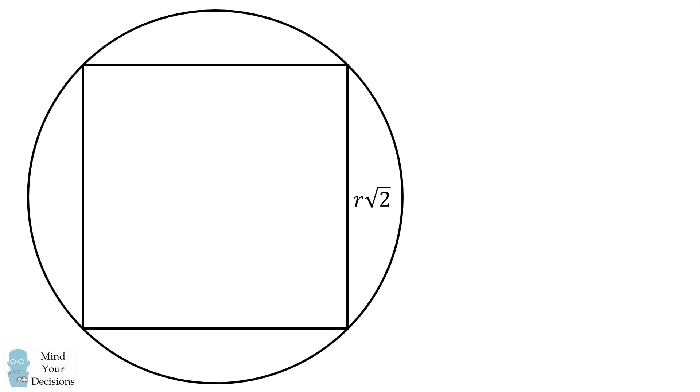Now let's return to the small square. How can we figure out its side length? We're going to draw a couple of line segments. We'll first draw the radius of the circle with length r to a corner of the small square.